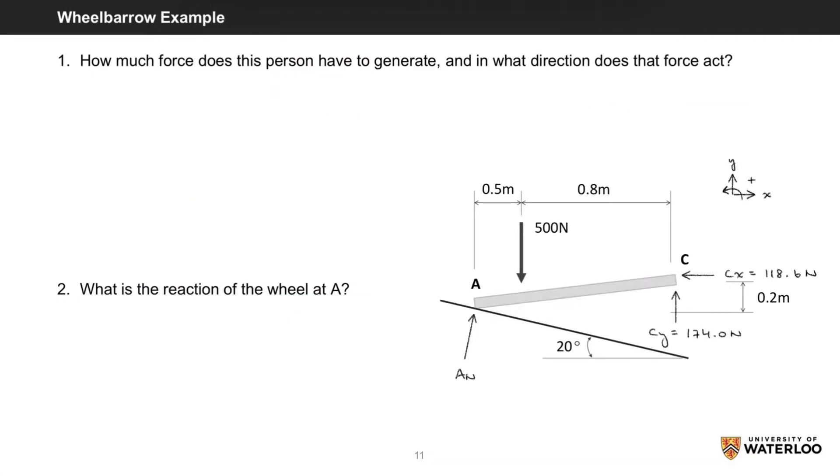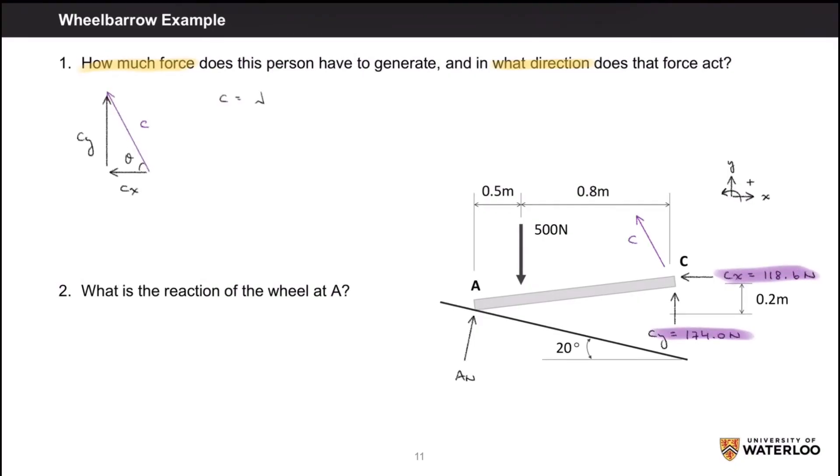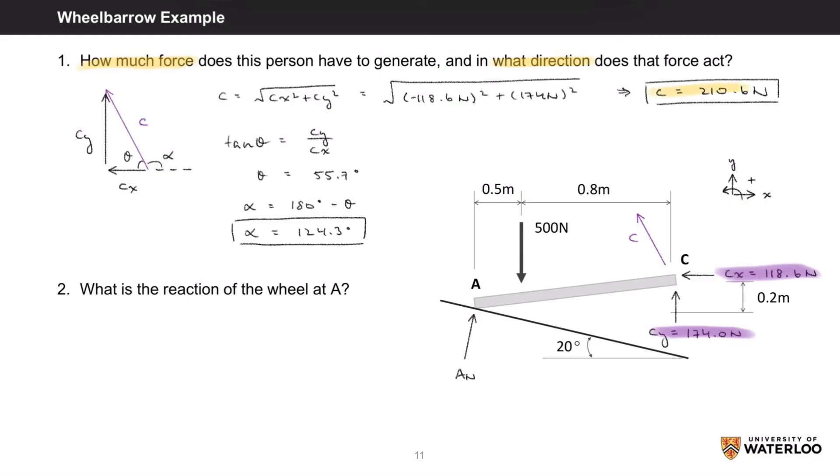To answer the questions from this problem, how much force does this person have to generate and in what direction does the force act? Since we found the x and y components of the force C, we can use the Pythagorean theorem to solve for the resultant force C, giving us a force of 210.6 newtons. To find the direction in which this force acts, we will use some basic trigonometry and supplementary angles to find this angle alpha, which is 124.3 degrees from positive x. So this person will have to generate a force of 210.6 newtons at an angle of 124.3 degrees from positive x.